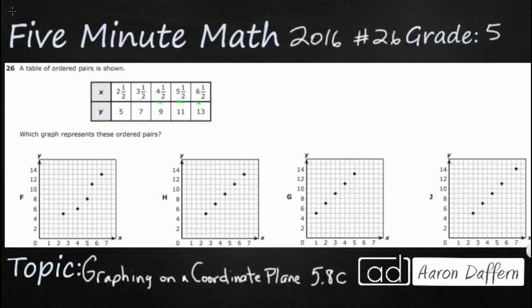So let's just take a look and see if we can match up any of these graphs to these ordered pairs. And we'll just start right here with 2½, 5. So if we wanted to put that in an ordered pair, it would kind of look like this. So that's the first point on each of these graphs.